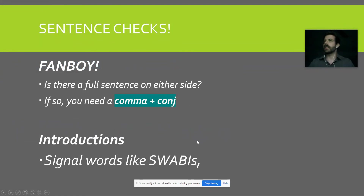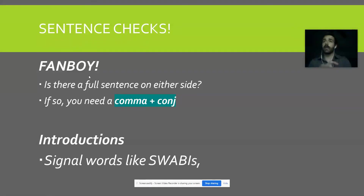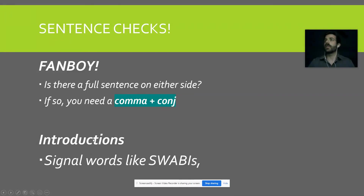Here are some sentence checks to look for as you're writing. If you see a FANBOY — like "and," "or," "but," or "so" — is there a full independent clause on both sides? If so, you need a comma and conjunction. Or if you're using an introduction or signal word like since, when, after, because, or if at the beginning of your sentence, that's usually indicating introductory material before the main part of your sentence, and you'd need to separate it with a comma. Remember, it doesn't always have to be a full dependent clause — it could just be a single word.